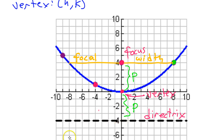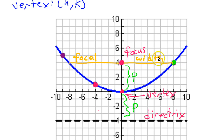If you measured the width of the parabola at the focus, that measurement is called the focal width — it's the width of the parabola at the focus.